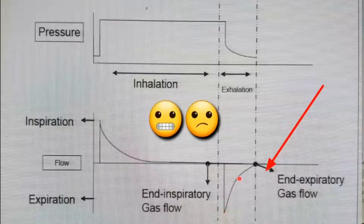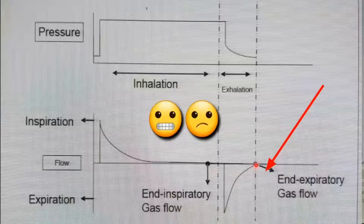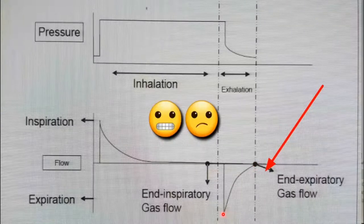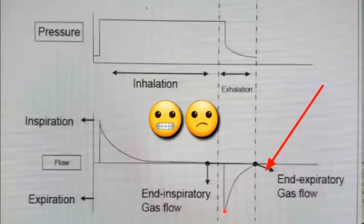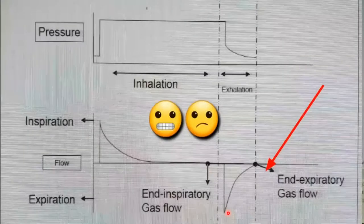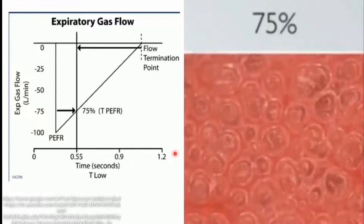We are not allowing complete exhalation to zero. We look at the peak expiratory flow — say it's 100 liters per minute — multiply by 0.75 to get 75 L/min, then look at the timestamp at peak flow and the timestamp at 75% of peak flow. That time difference is your T-low. Setting T-low this way ensures you trap 75%, maintaining alveolar recruitment.